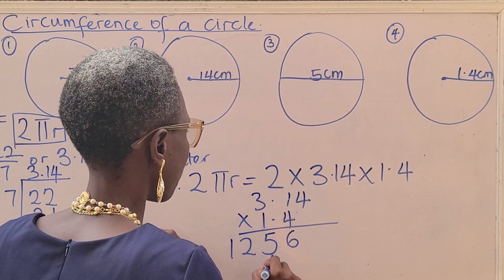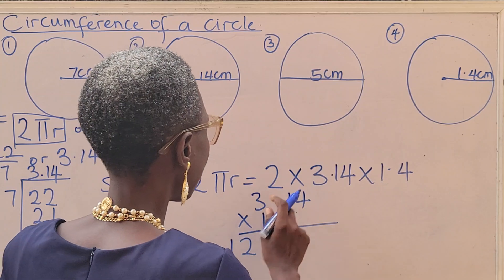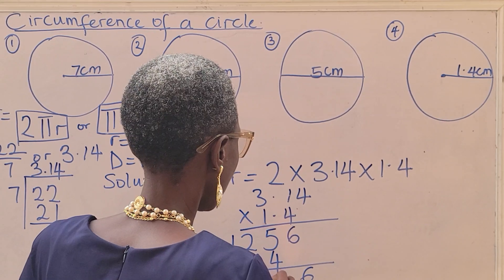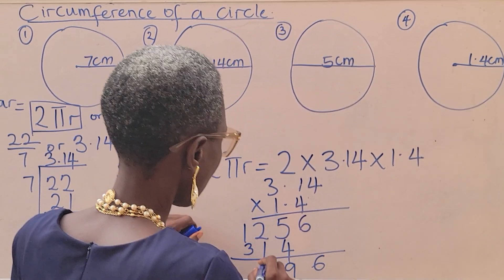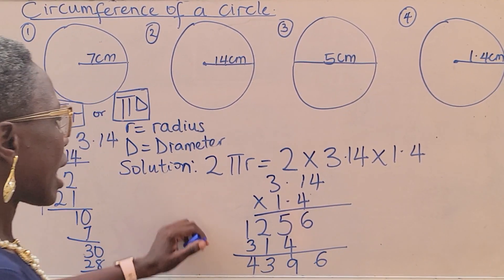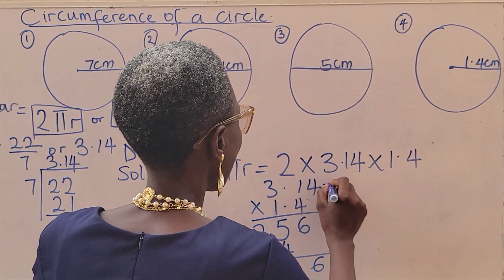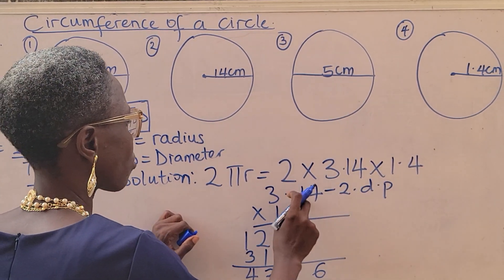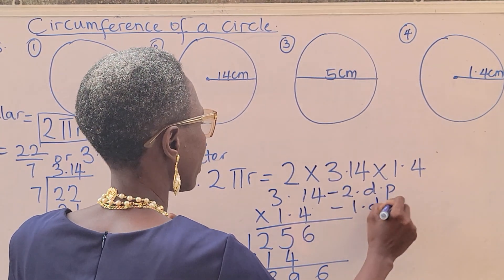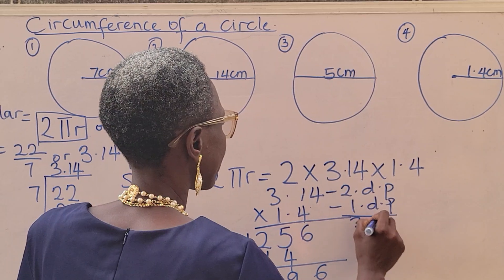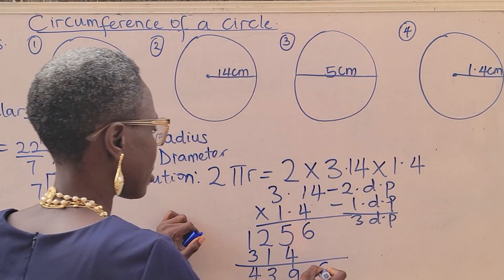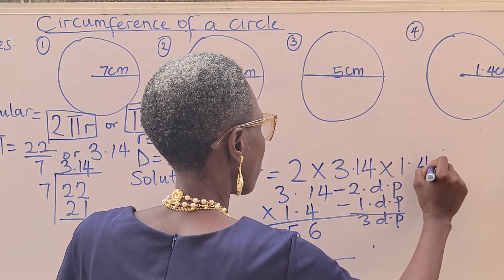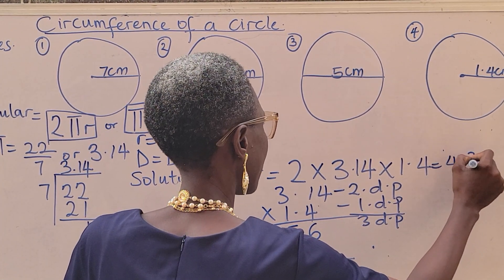Now 1 times 4 is 4. 1 times 1 is 1. 1 times 3 is 3. Now we can add up: 6, 9, 3, and 4. As it is, I'm going to place my decimal points this way. This is 2 decimal places, and this is 1 decimal place, making 3 decimal places. Then I can count it: 1, 2, 3. So my final answer is 4.396.